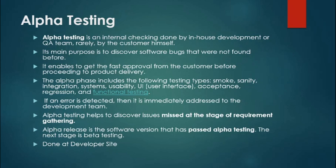We cannot directly deploy code into the production environment unless the three phases of testing — alpha, beta, and gamma — are done properly. Alpha testing includes different types of testing like smoke, sanity, integration, system, usability, UI, acceptance, regression, and functional testing. We will look at all these in detail in upcoming videos.